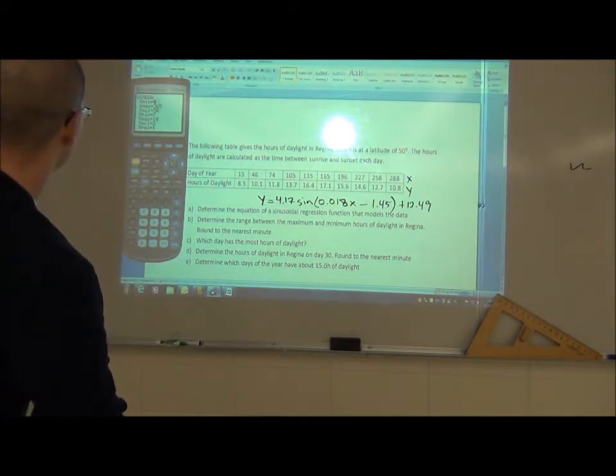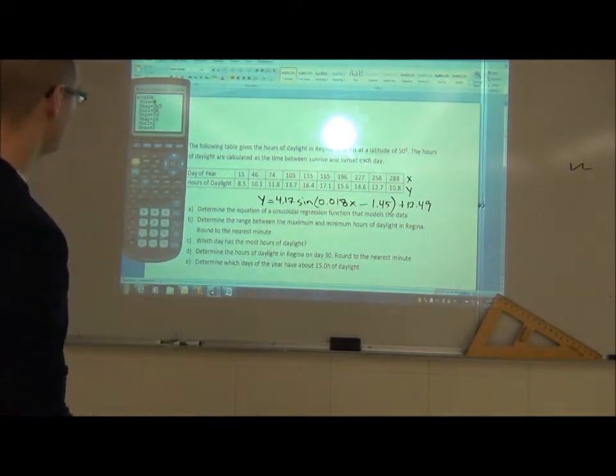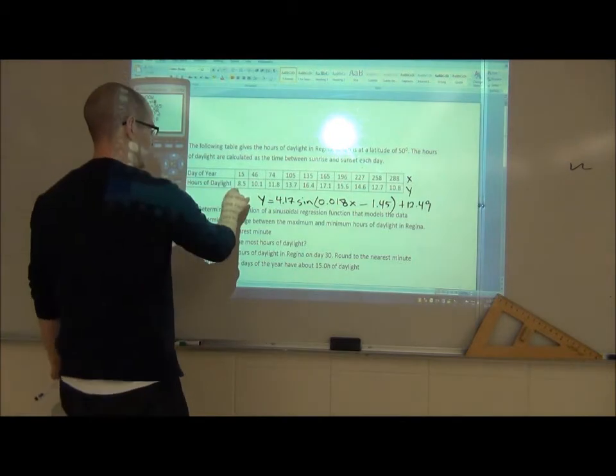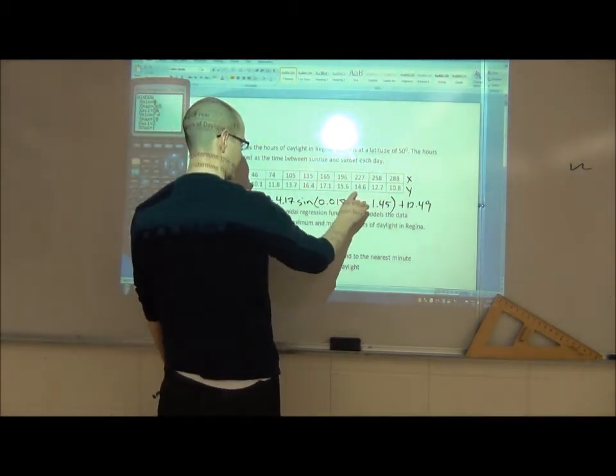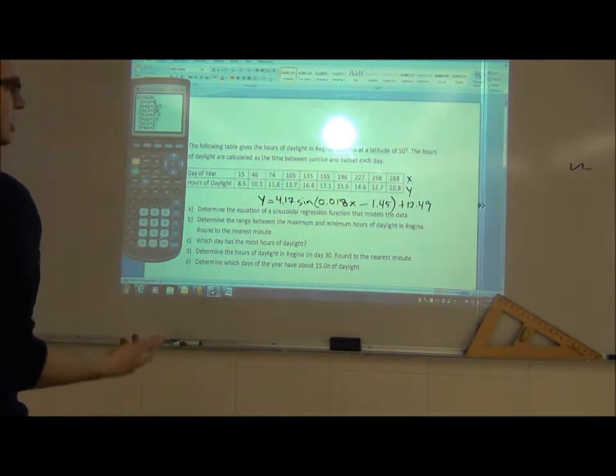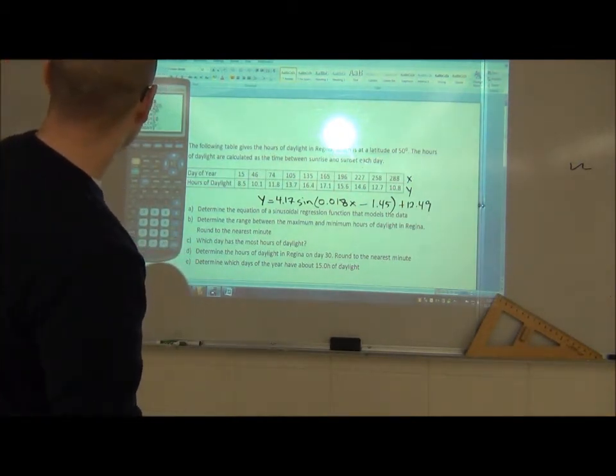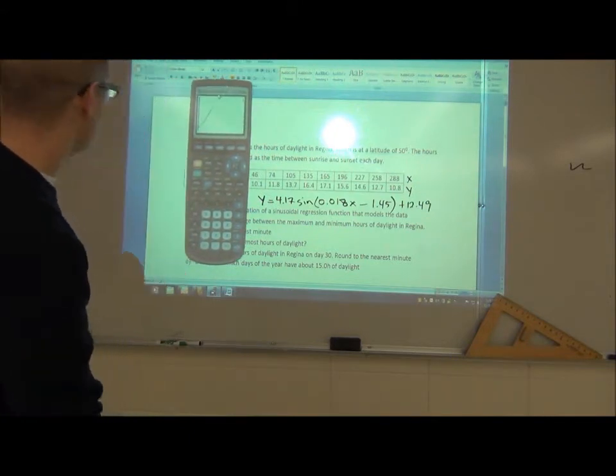I know there's 365 days in a year, so I chose to go from day 0 to day 365 and I made my scale 50, so each tick on my graph is 50. For the vertical you can see that the lowest is 8.5 and the highest is 17, so I went from 7 to 18. You want to go a little bit beyond the range each way. And I made my y scale 2.